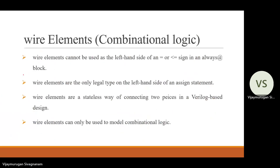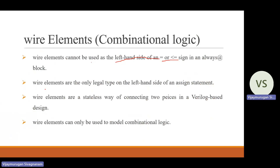The fourth rule: wire element cannot be used on the left hand side of an equal or less-than-equal sign in an always block. Before the always block we cannot use the wire symbol. Wire elements are the only legal type on the left hand side of an assign statement.